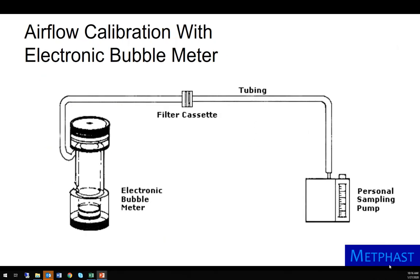The air flow calibration setup with the electronic bubble meter is shown here. The top of the electronic bubble meter is connected to the sampling train. The same procedures mentioned for the manual soap bubble meter are used to determine air flow.